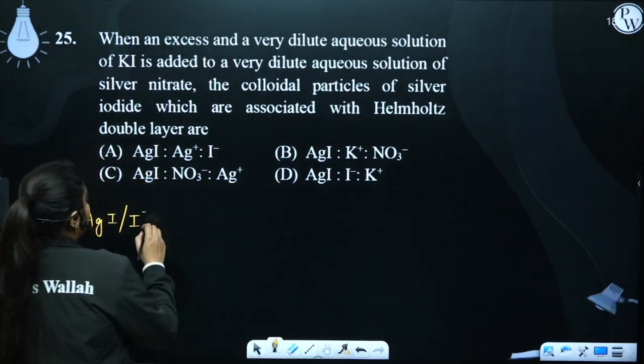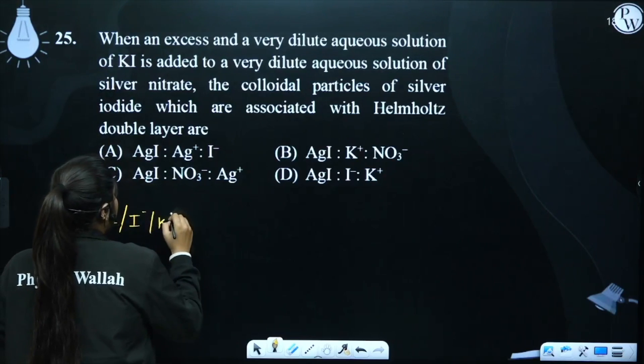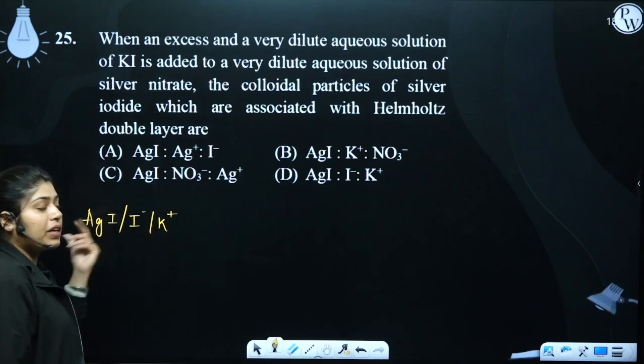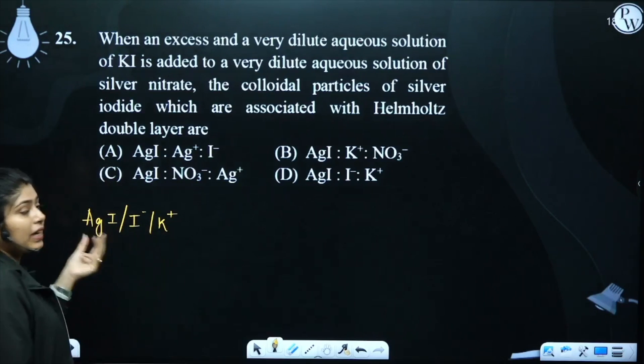So who will take the I minus? Potassium plus. So what will I minus and potassium plus get? Both of them together form an electrical double layer.